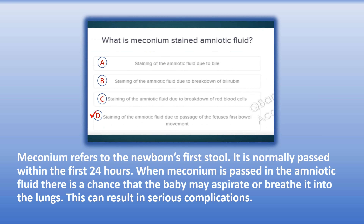The correct answer is D. Staining of the amniotic fluid due to passage of the fetus's first bowel movement. Explanation: Meconium refers to the newborn's first stool. It is normally passed within the first 24 hours. When meconium is passed in the amniotic fluid, there is a chance the baby may aspirate or breathe it into the lungs, which can result in serious complications.